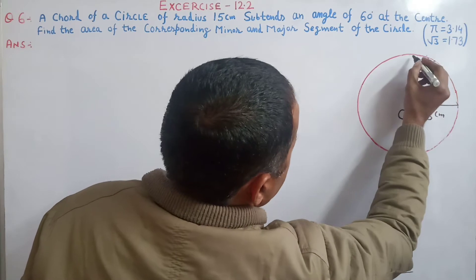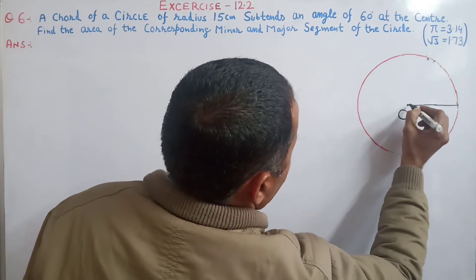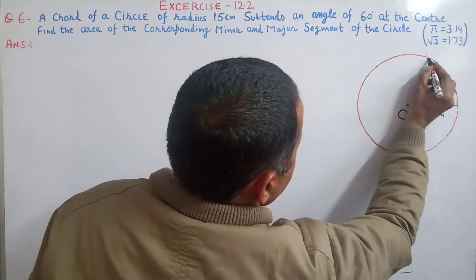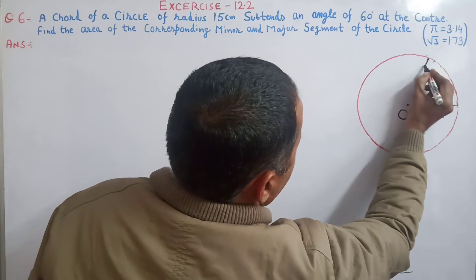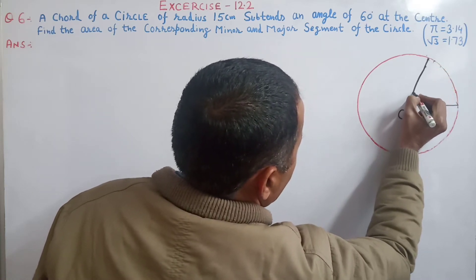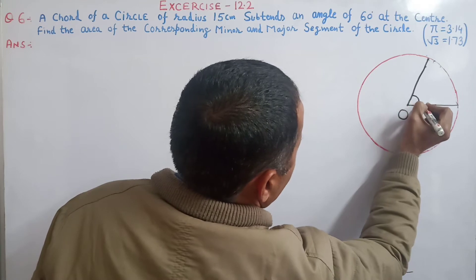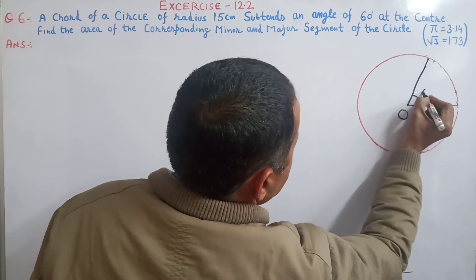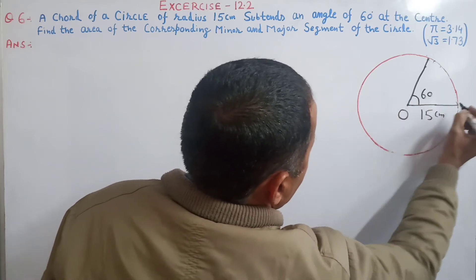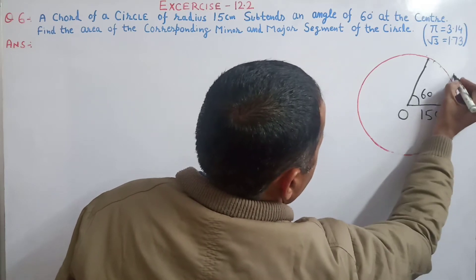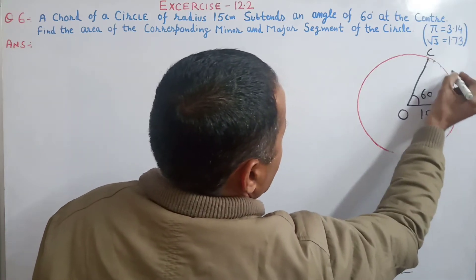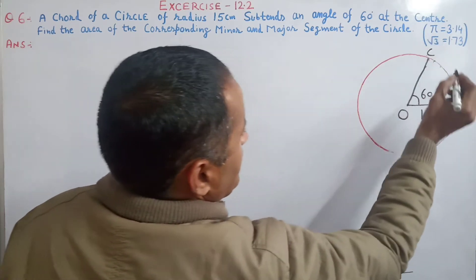If you have a perpendicular line, it will be a 90 degree angle, and the chord subtends a 60 degree angle. We will name the points O, A, B, C. So A, B, C — we have a carve out here.